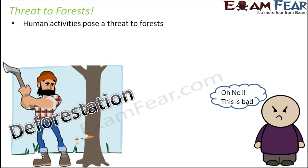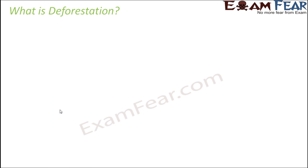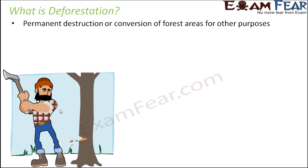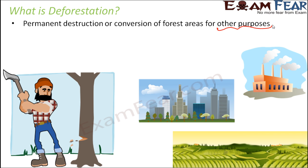Cutting down of trees is called deforestation. Deforestation is the permanent destruction or conversion of forest areas for other purposes. These other purposes mostly include setting up factories and industries, or using forest land for agricultural purposes — growing crops to sell and earn money. There are many reasons responsible for deforestation taking place.